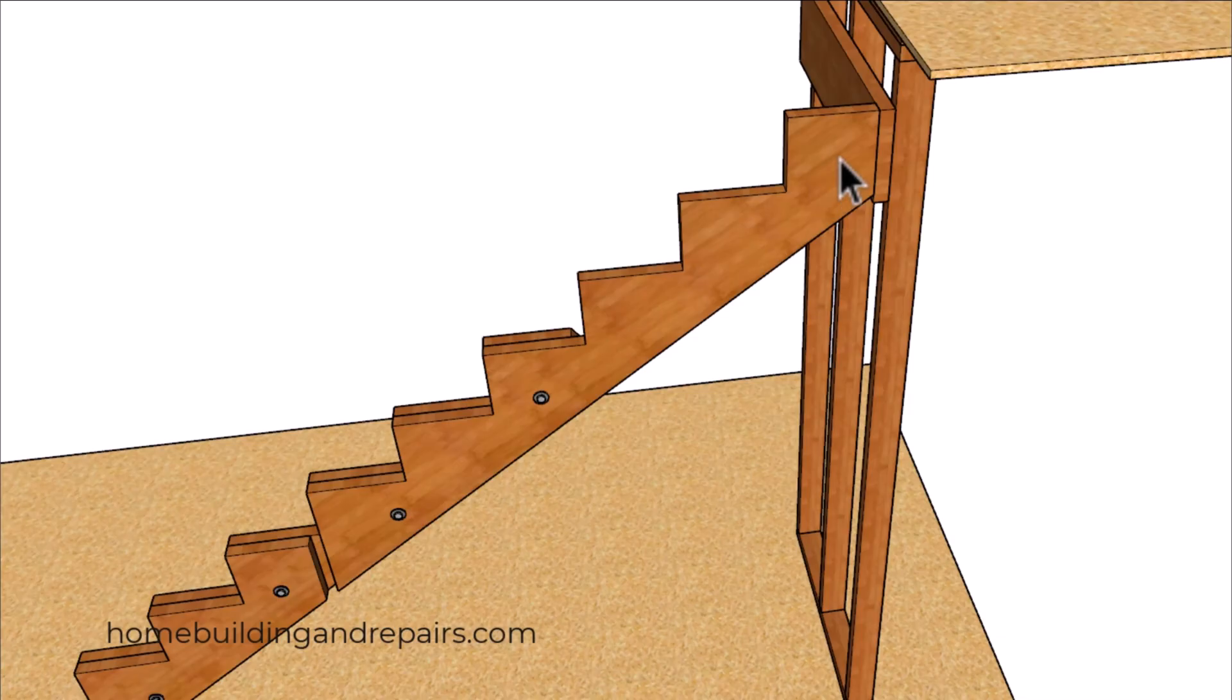This top stringer here is shaped so that we can use a ledger. Remember you're going to have to deduct the width of the ledger from the top here. For example, if I have a 10 inch long tread, then this is going to be 8.5 inches. Then I'm going to have an inch and a half ledger giving us 10 inches.